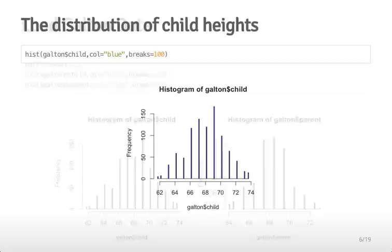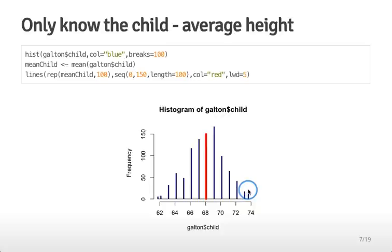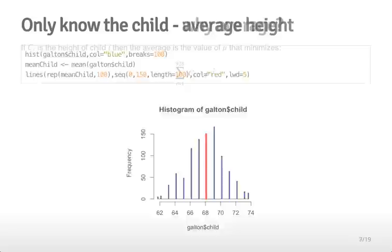One of the things you might ask when looking at the distribution of children's heights is how would you summarize this distribution? In particular, if you had one number to summarize it, what would you use? A very good choice for a symmetric distribution like this is the mean. Here I've shown the histogram of children's heights with the mean value shown as a red bar at about 68 inches. This is useful because it tells you where the distribution is centered, and it's also optimal in a particular sense.